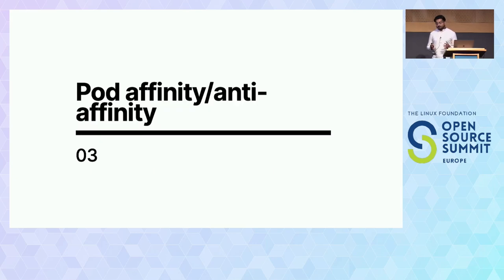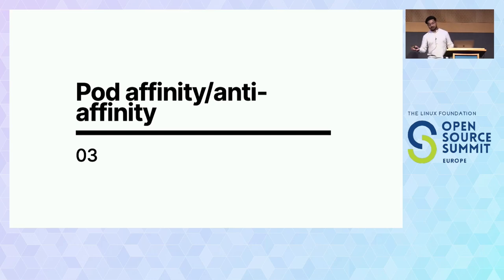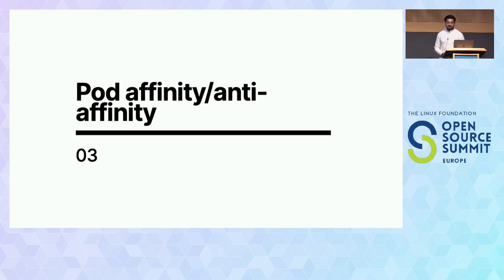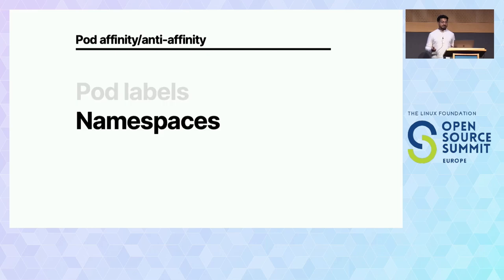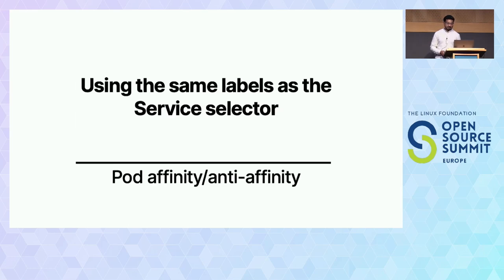The next topic is pod affinity and anti-affinity. Sometimes there are apps you want to live next to each other — maybe to reduce latency when a cluster spans different regions. Or sometimes there are pods you don't want next to each other — for security reasons, for example, you don't want them to be able to read each other's disk. The way it works is based on labels of the pods, and pods from the same namespace are considered for scheduling.